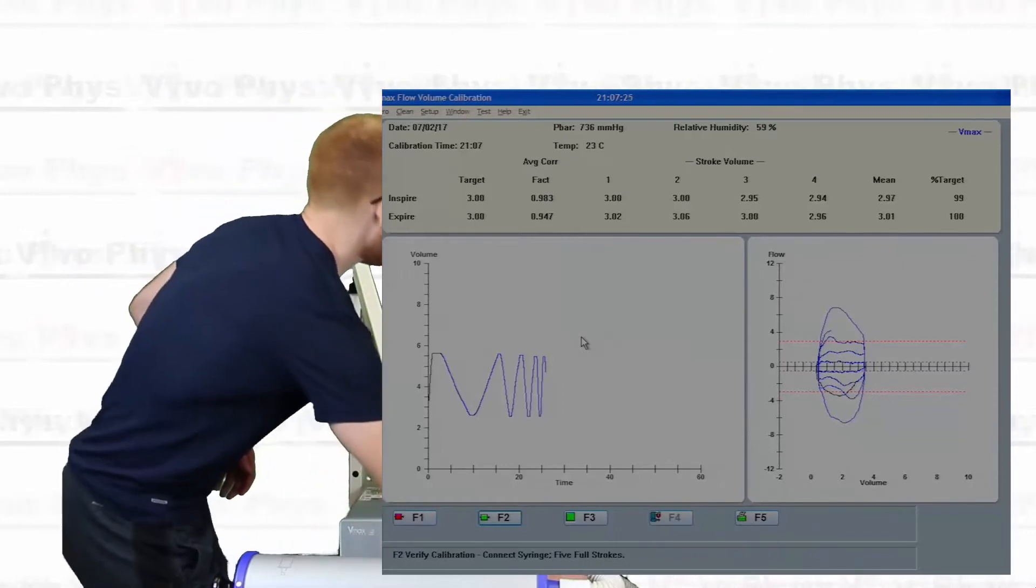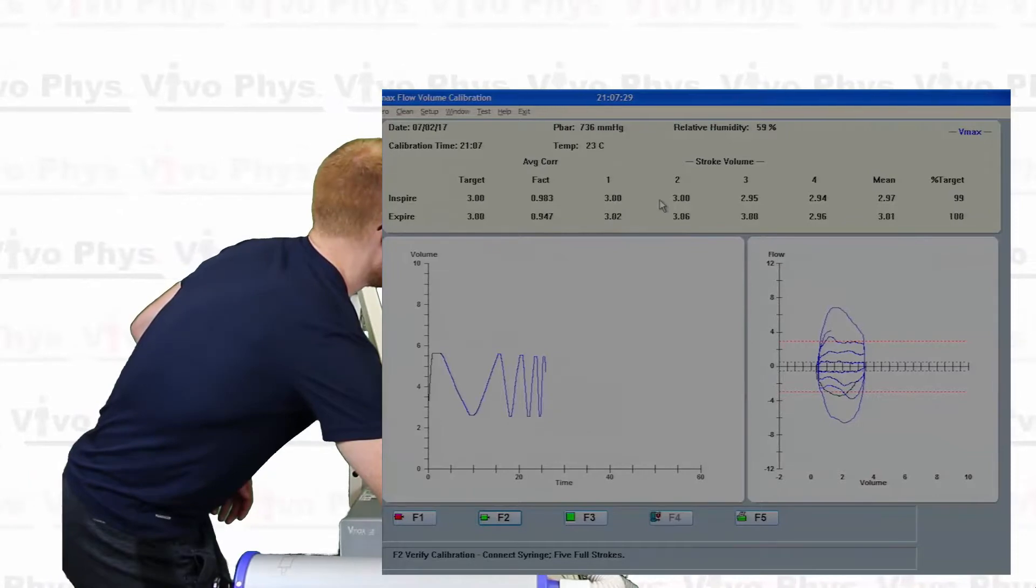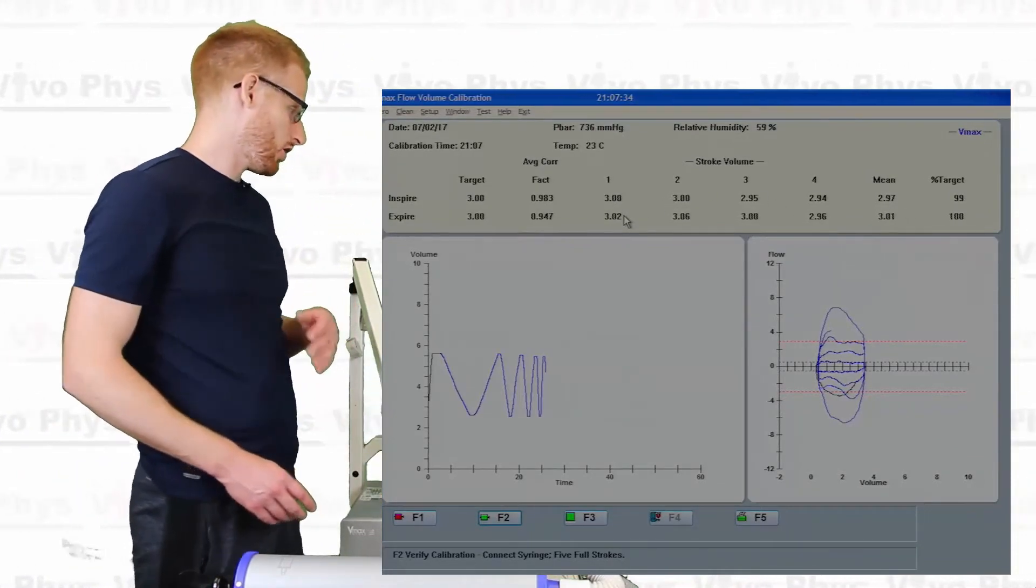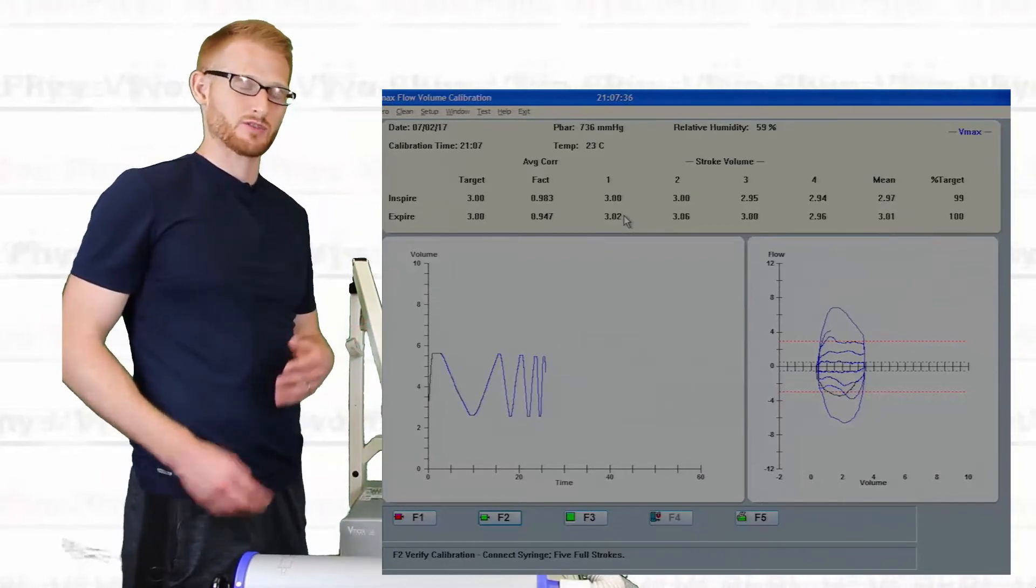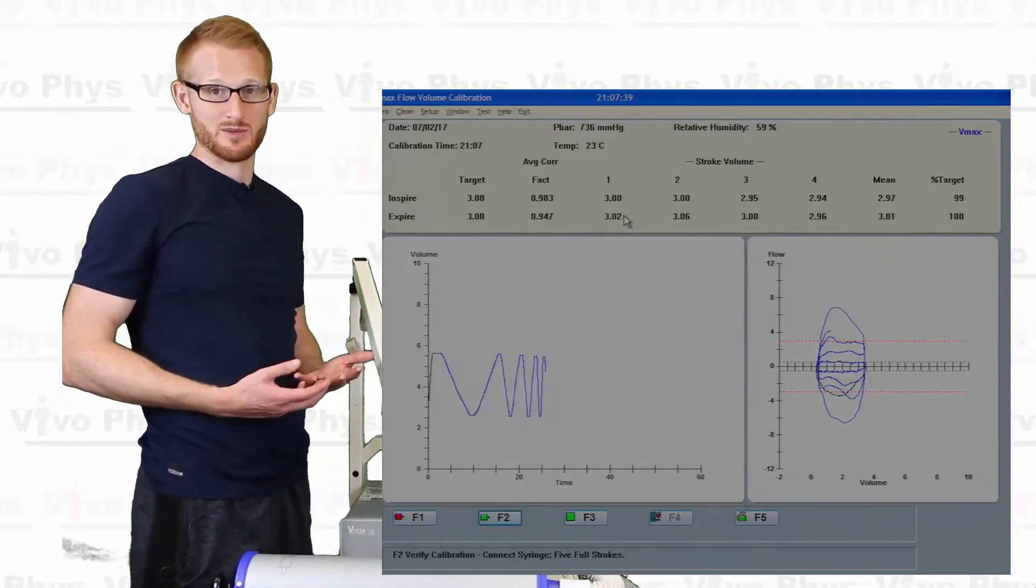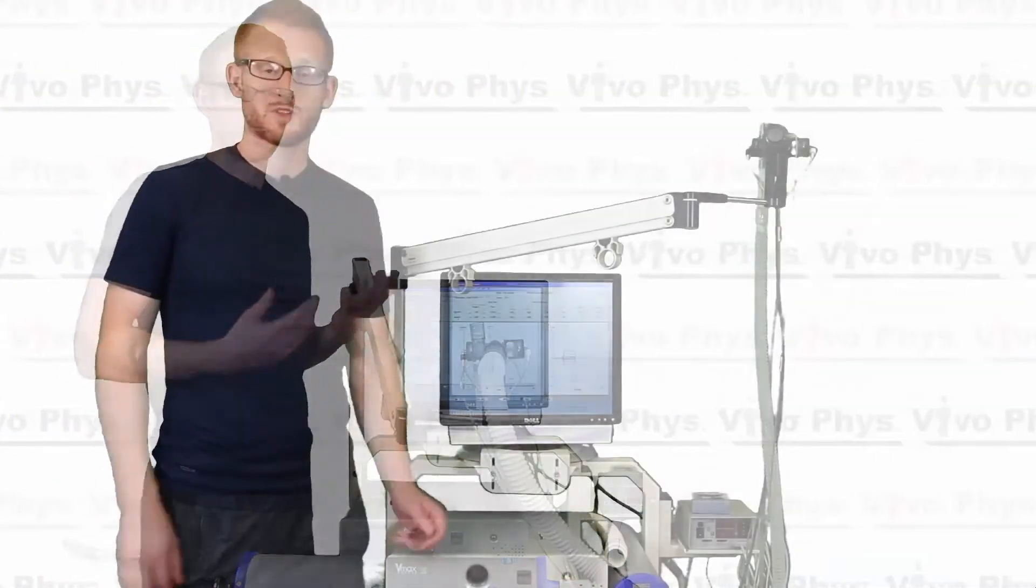However, you can always look here and see the difference between the inspired and expired error in these different trials. So the different strokes that we did. And they should all be pretty close to three. If they're not really close to three, it will give that error that we kept seeing there. So I had to do it three or four times at least there just to get it to work.